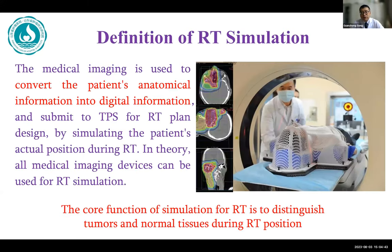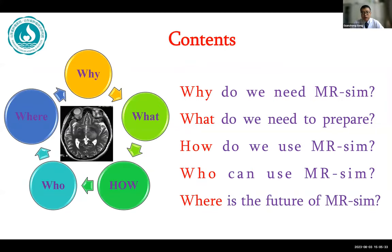First of all, let me introduce the definition of RT simulation. We have been talking about radiation therapy simulation — what exactly is it? Radiotherapy simulation converts the patient's anatomical information into digital information using imaging methods, simulating the patient's actual position during radiation therapy and submitting the information to TPS for RT planning. In theory, all medical imaging devices can be used for radiation therapy simulation. The core function is to distinguish the tumor from normal tissues. I will introduce MRI simulation following five aspects: Why, What, How, Who, and Where.